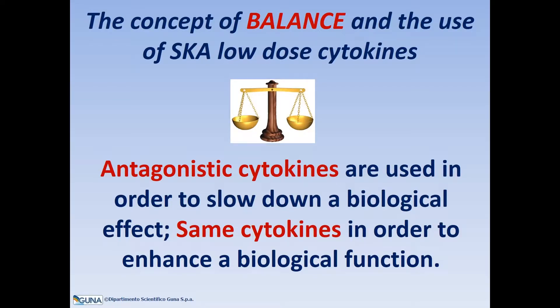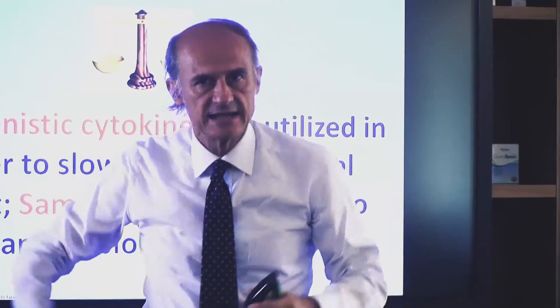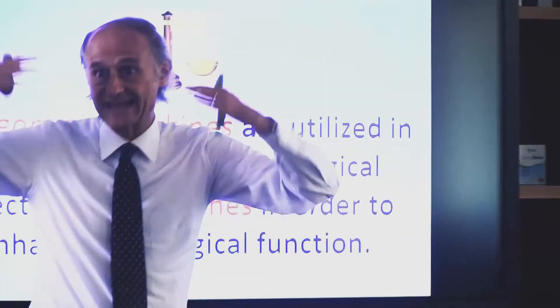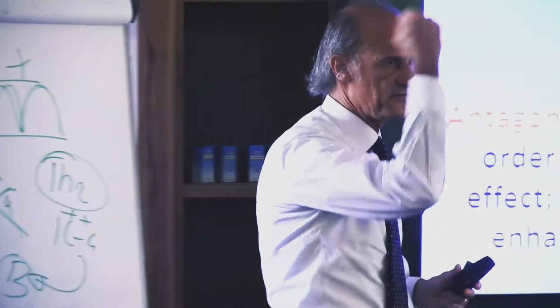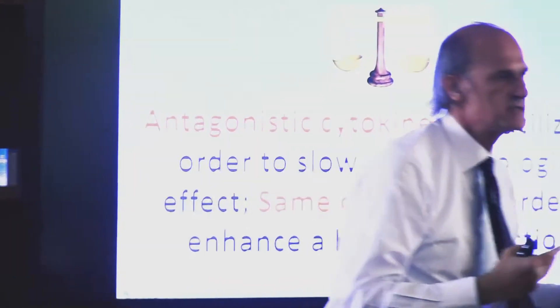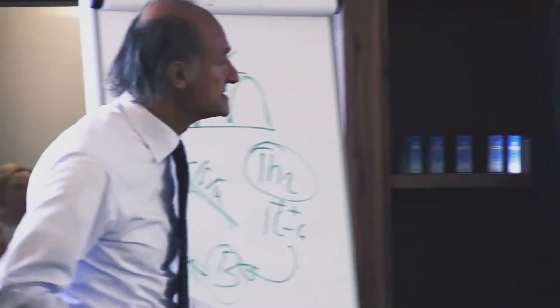Antagonistic cytokines are utilized in order to slow down an excess of activity. With Dr. Passafaro you will also see the use of hormones — to slow down, according to the negative feedback we studied in physiology, an excess, or to support, according to positive feedback, a deficiency. It's absolutely linear, logical, and we refer to physiology.